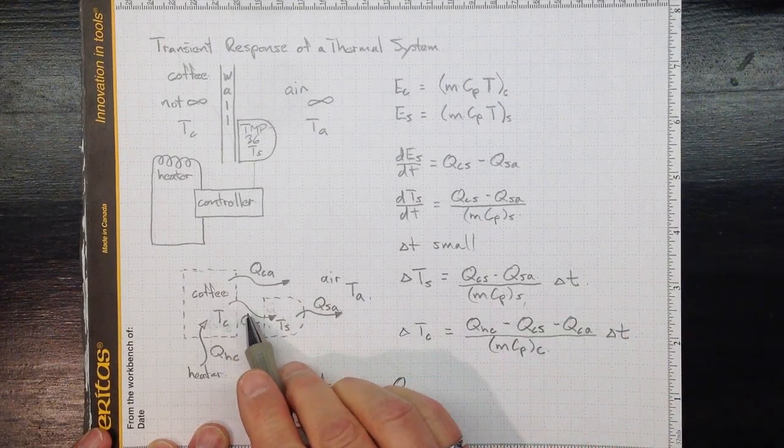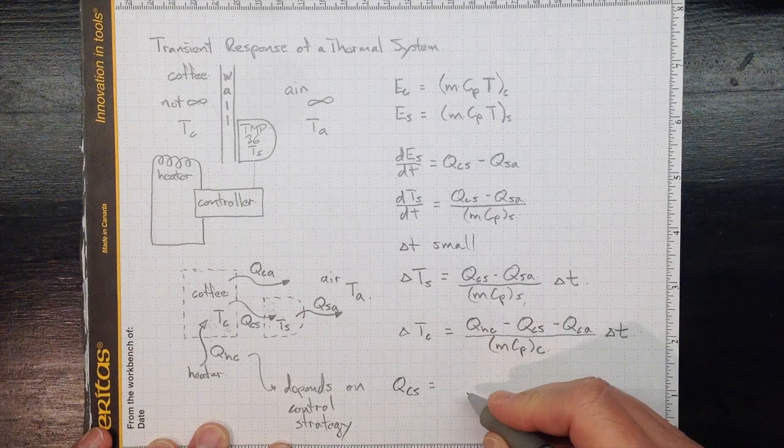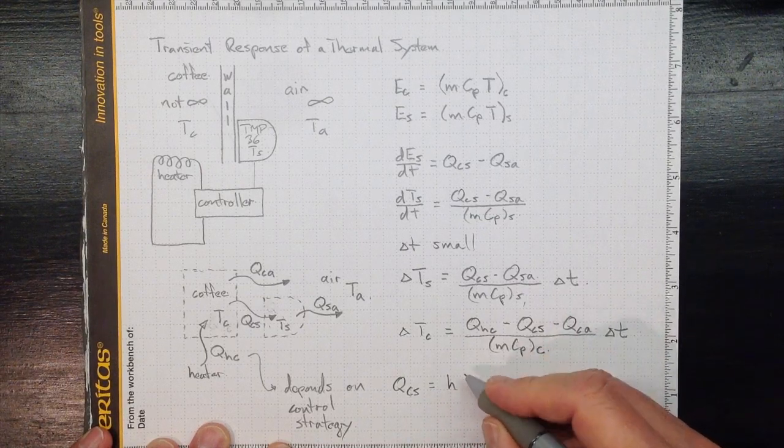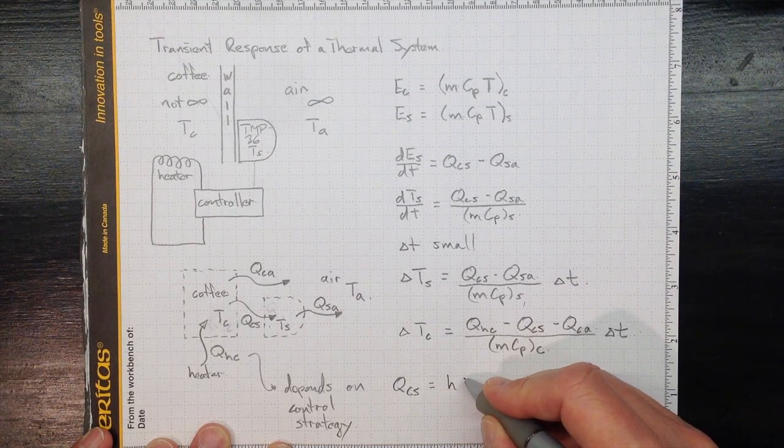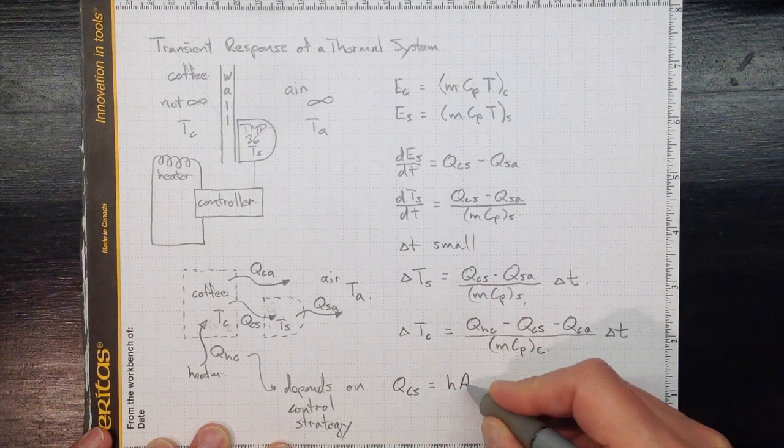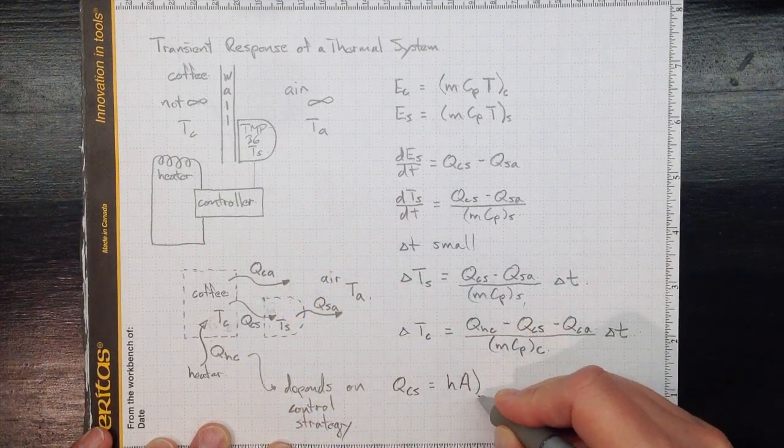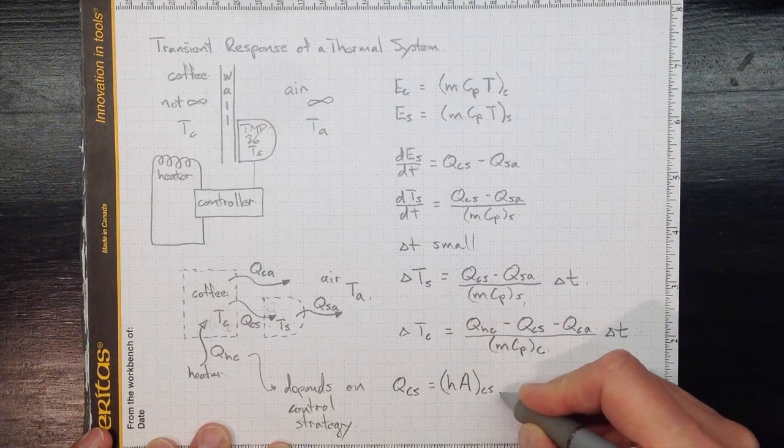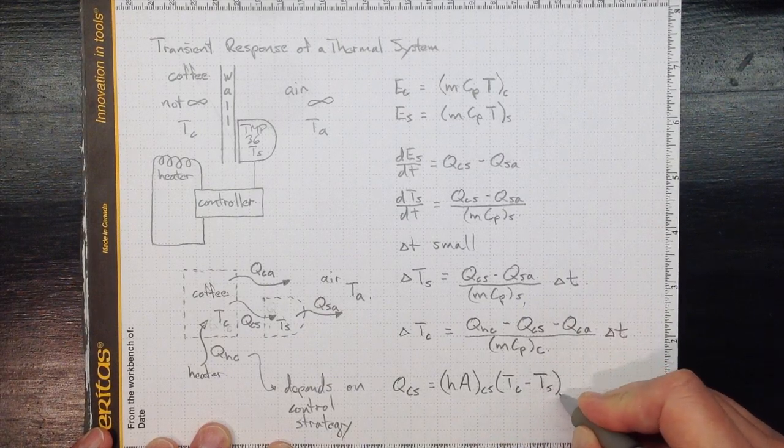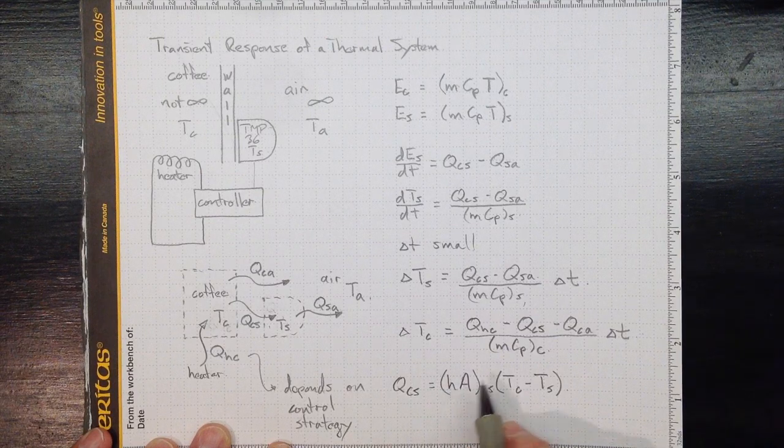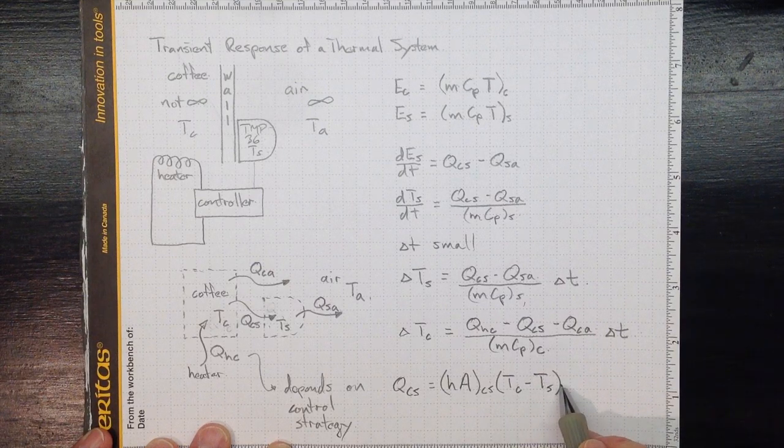Q from the coffee to the sensor, well we know from before that that's going to depend on a heat transfer coefficient that we really need to figure out more about heat transfer to know what it is, but it'll be something, some value. Q from the coffee, the area, how large this area is where those two interact between the coffee and the sensor, times T coffee minus T sensor. And we know that this and the mass and specific heat are going to be related to the time constant that we see, so we should be able to pull that out.